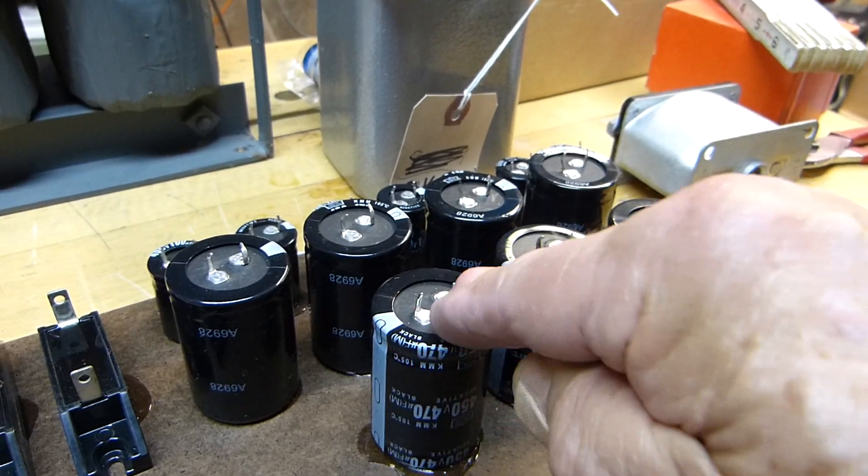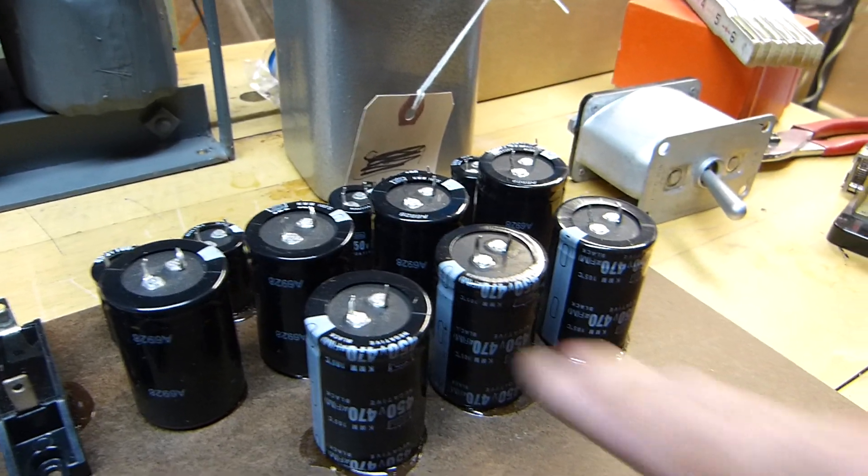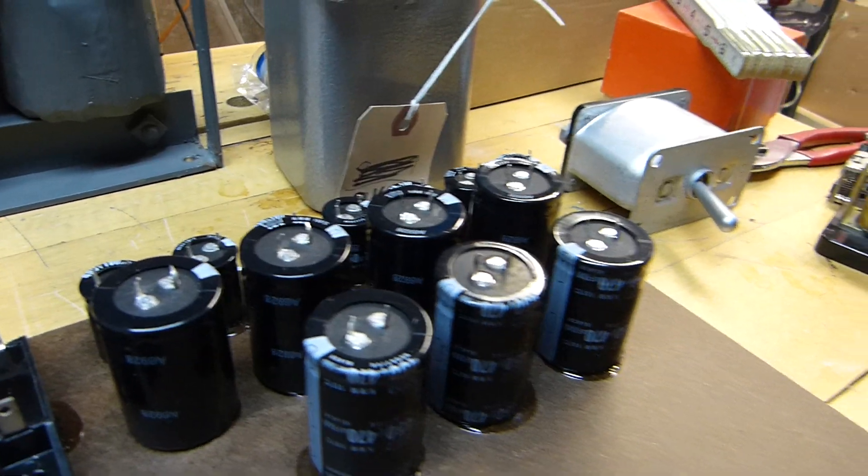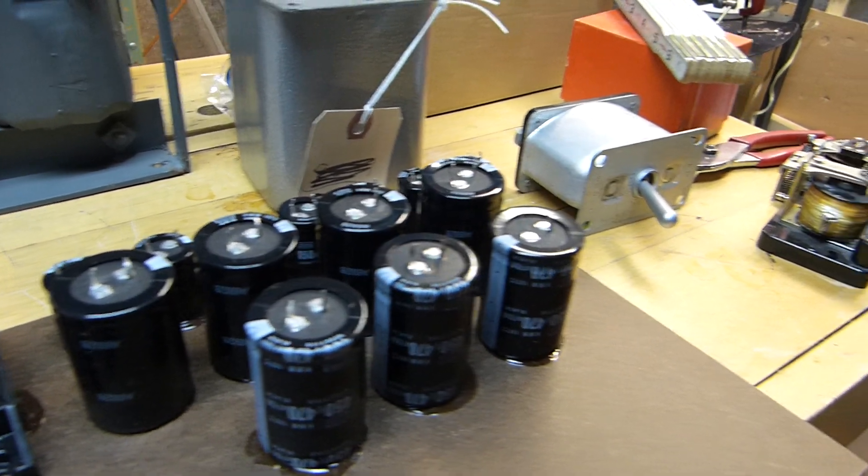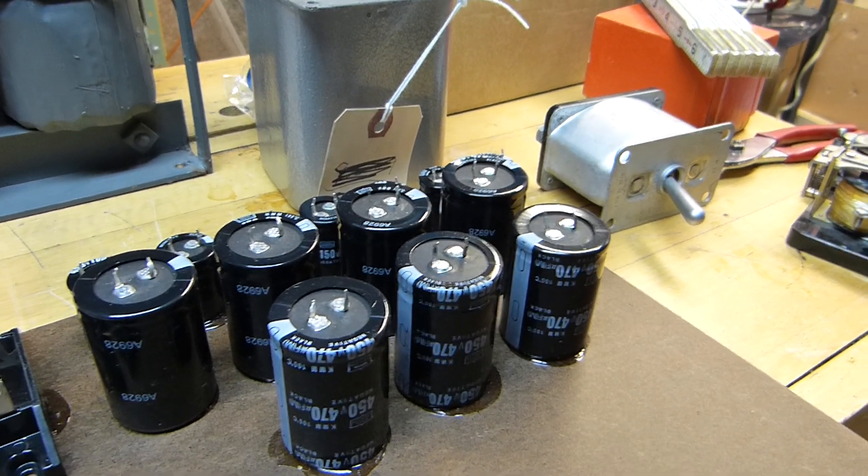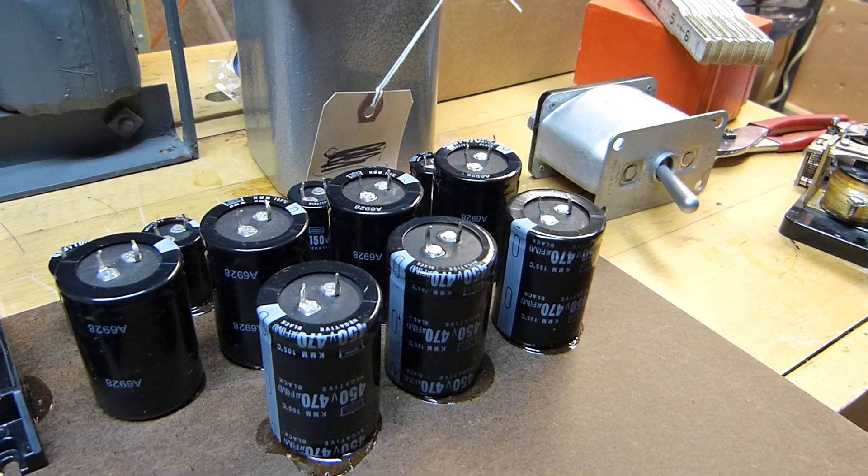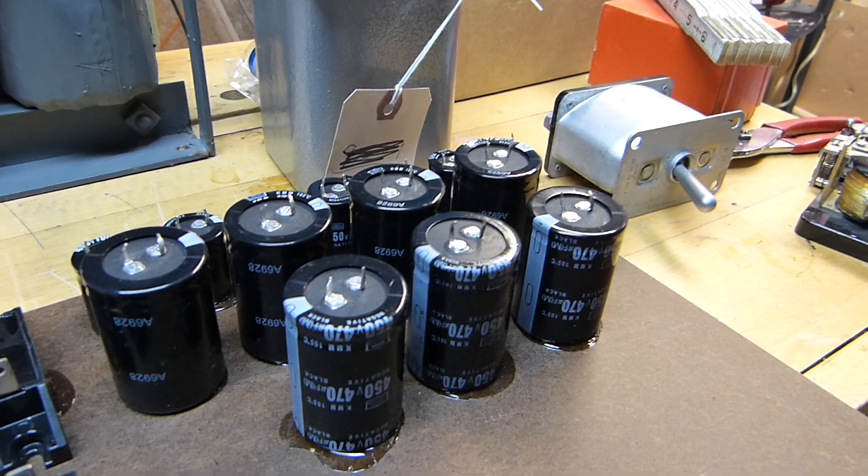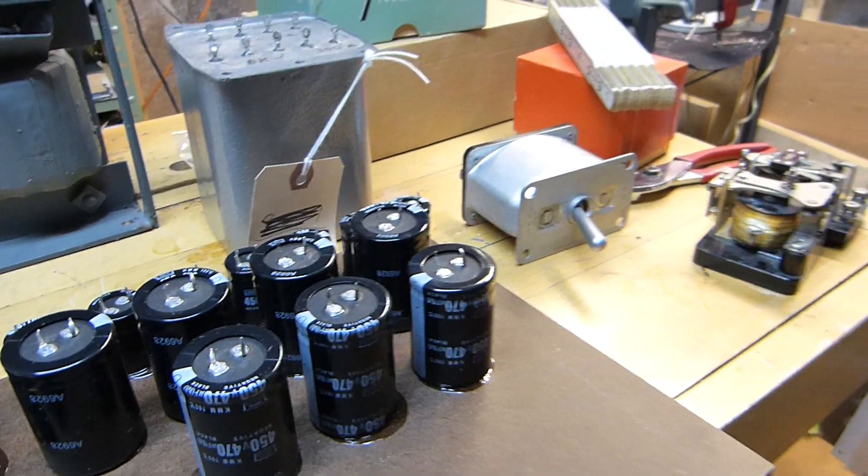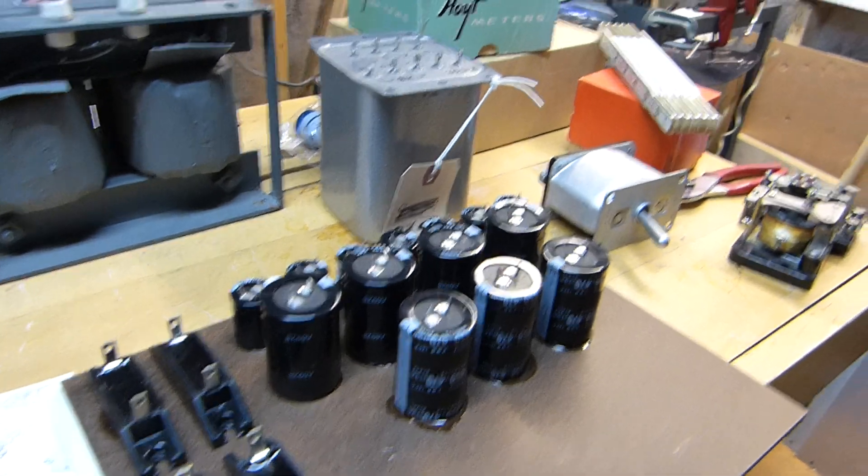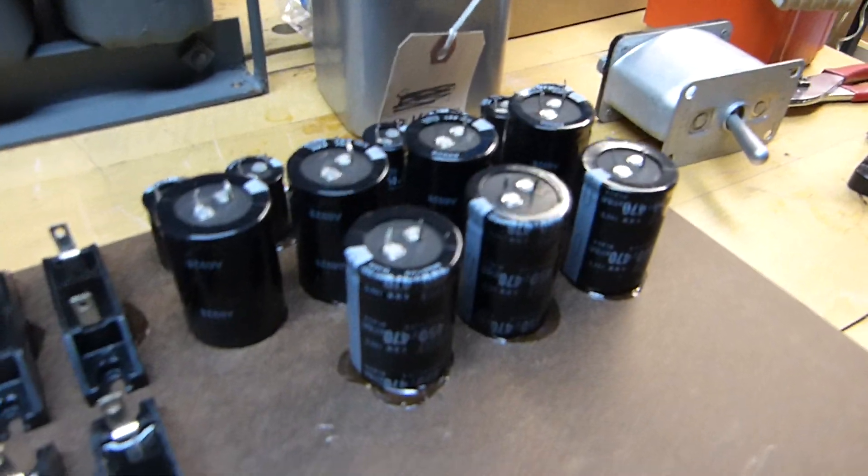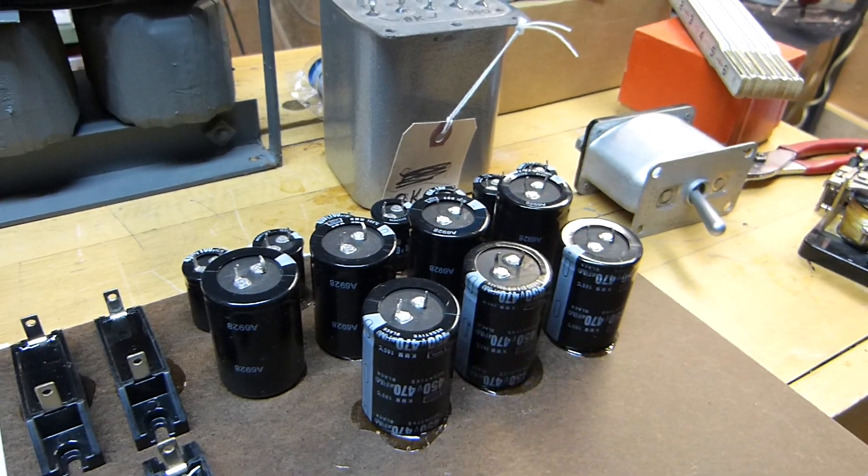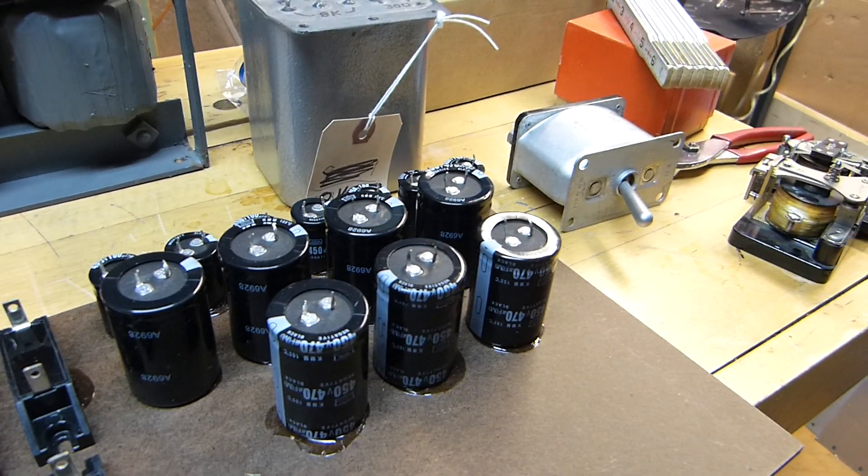Then you have to put voltage equalizing resistors across each one. This is tedious work, wire running between them and a resistor across each one. That also helps bleed them down. It's not a good safety factor for bleeding them down because it can take several minutes, but eventually it will. It's better than nothing.